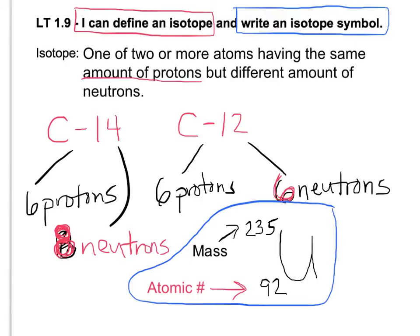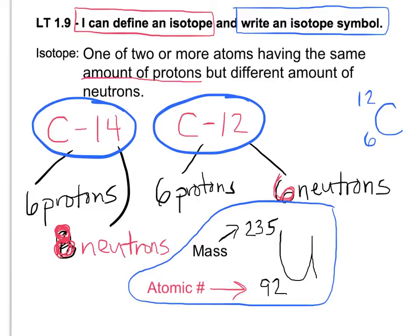So let's try a couple for carbon-14 and carbon-12 real quick. So for carbon-12, we're going to have carbon with a 6 and a 12. And for carbon-14, we'll have carbon with a 6, but this time a 14. So there are two more examples of isotope symbols.